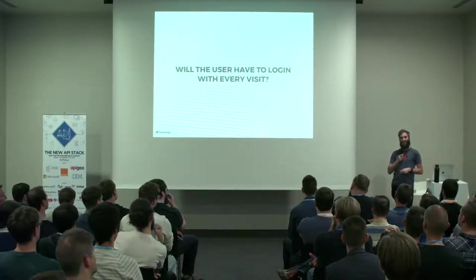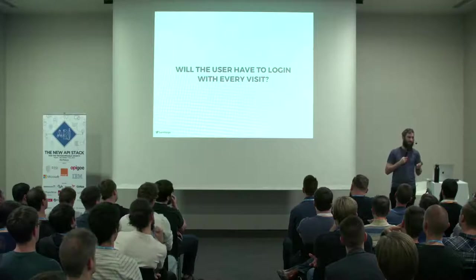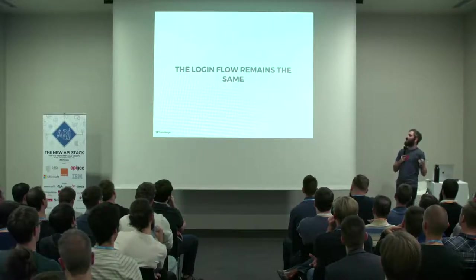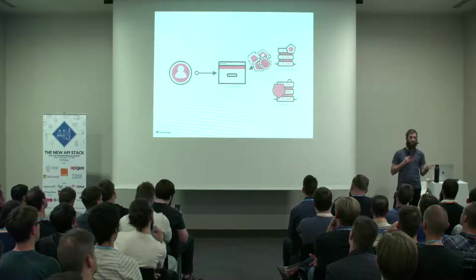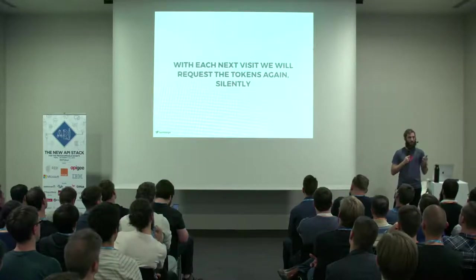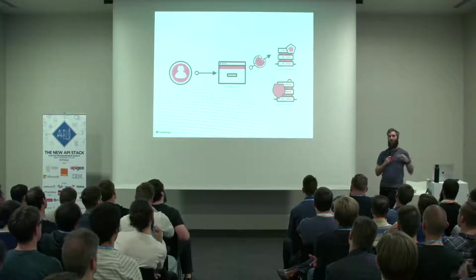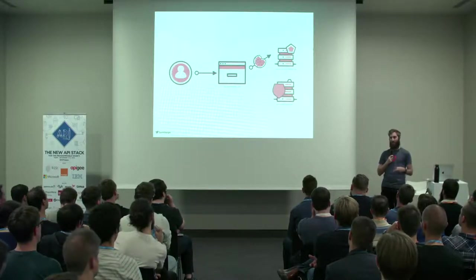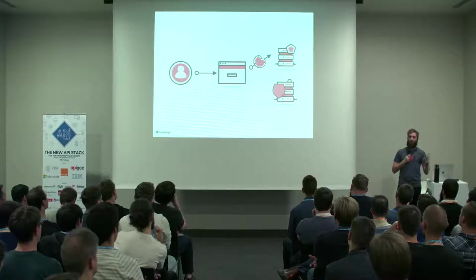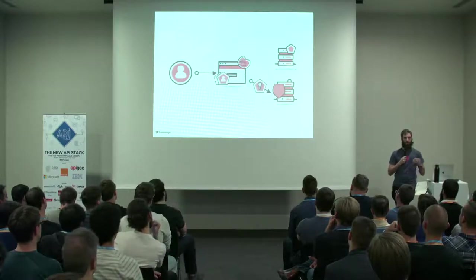Almost everybody has done this at some point or still does. But tokens saved in local storage can be susceptible to cross-site scripting. So there's another solution: the login flow stays the same, you get your tokens back, but you also get a cookie back from your authentication server, which you keep in your browser. The next time you visit this website, you do a silent request to the authentication server — usually done in an iframe — so in the background your single page application requests all the tokens and saves them in memory. This means with every visit you request the tokens, but you don't save them persistently in local storage, which makes them less susceptible to cross-site scripting. You send the cookie, you get your tokens, and then use them to get your data.